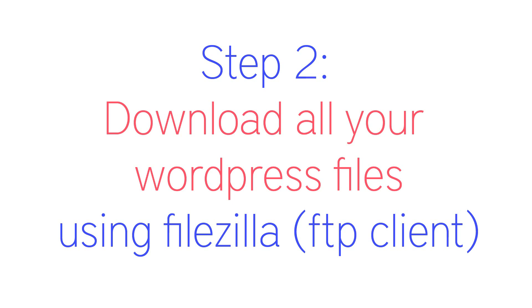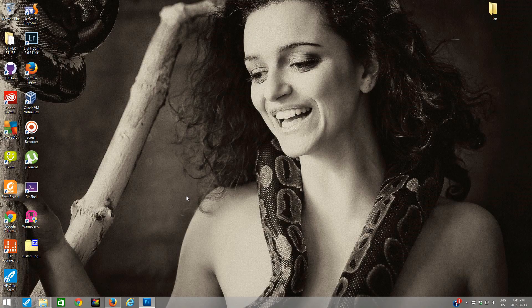Now that we have the database backed up from the live website, the second step is to download all your WordPress files and folders from your live website to the local server. I am going to do that using an FTP client called FileZilla. You can use any other FTP client if you have your own preference, but for this video I am going to use FileZilla.